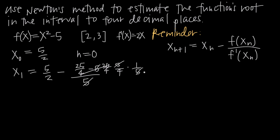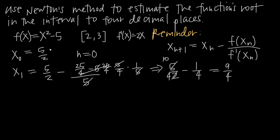So we have 5/2 minus 1/4. Multiplying the first fraction by 2/2 gives us 10/4, and 10 - 1 = 9, so we end up with 9/4. So x₀ = 5/2 and x₁ = 9/4.